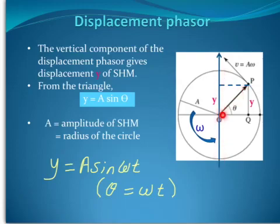And from this triangle here, y can be obtained by using this equation there. A is the radius, this radius here. And sine theta, theta is the angle there. And so A is the radius of the circle, as well as the amplitude of this simple harmonic motion.